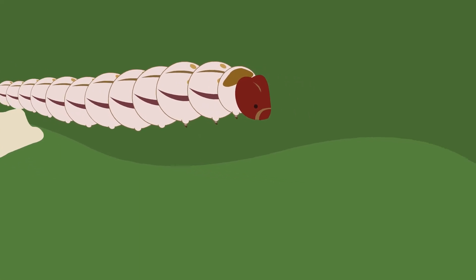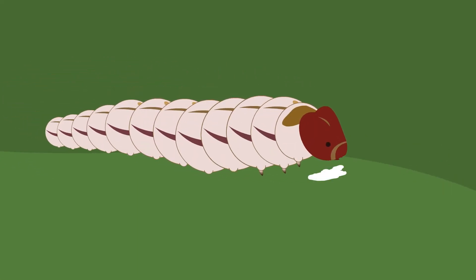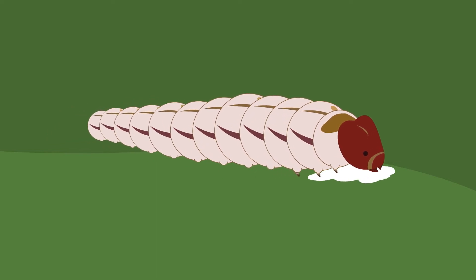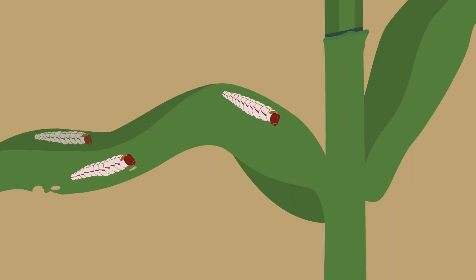The stem borer eggs take about four to eight days to hatch. Once hatched, the larvae start eating the leaves they hatched on. The larvae are creamy white to yellowish-brown with a reddish-brown head, and typically have four purple-brown stripes along their body.